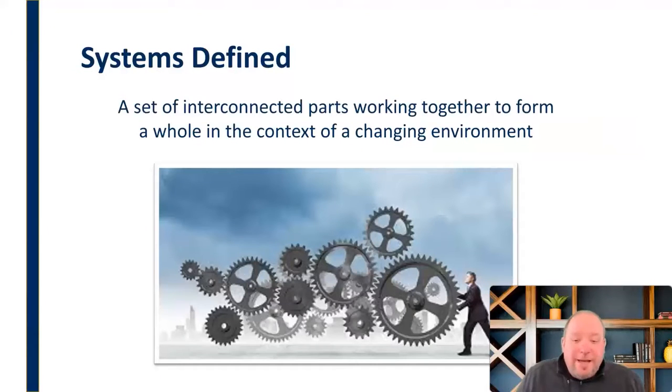A system is a set of interconnected parts working together to form a whole in the context of a changing environment. A group is just a series of interconnected parts working together to form a whole in a changing environment. So a group is very much a system.